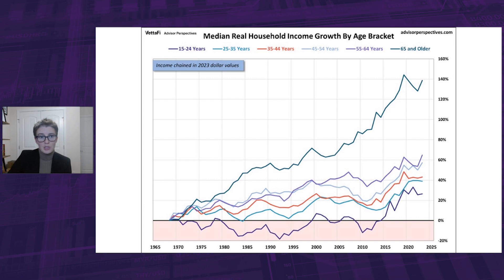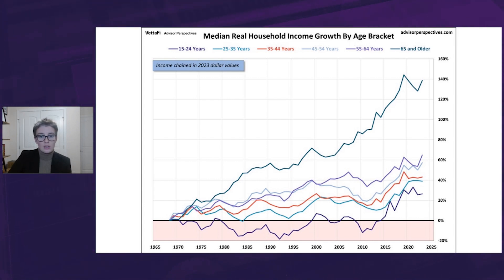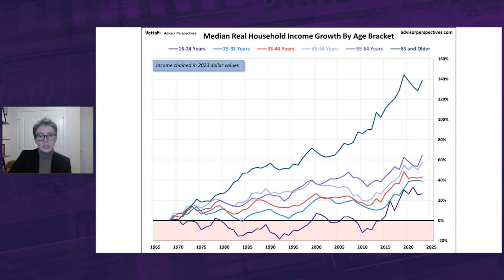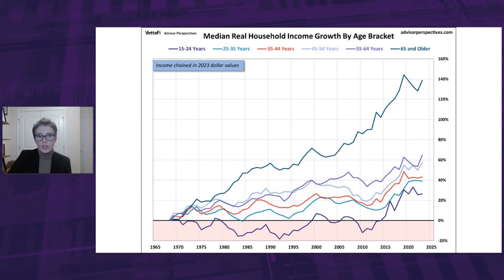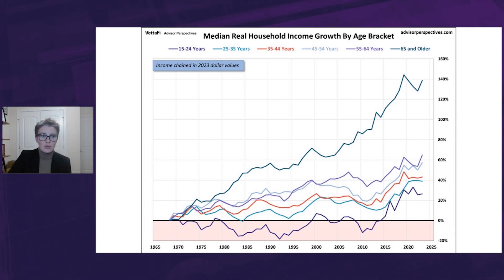Now something else to notice from this chart: the youngest age bracket, 15 to 24, had one of the lowest median household incomes as well as the smallest growth. But when you think about who makes up this age group — like teenagers, college students, individuals just starting their careers in entry-level positions, or those still exploring professional paths — it should come as no surprise since many are in roles that tend to offer lower pay.